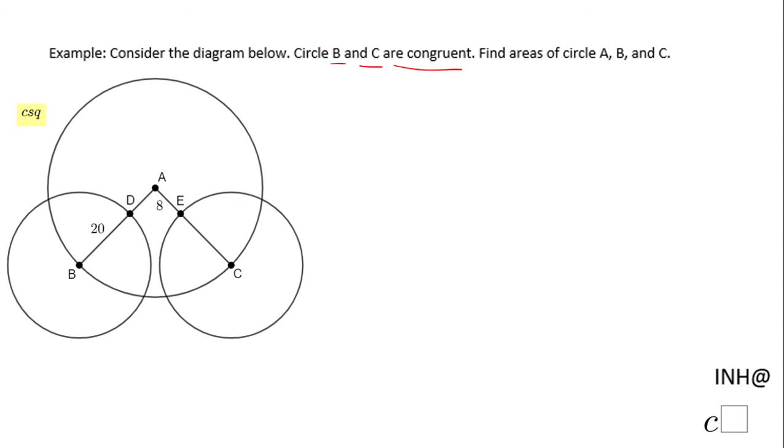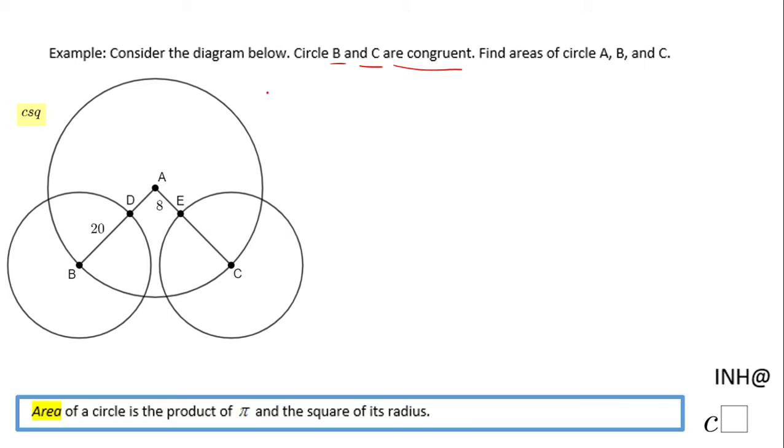We need to find the areas of these three circles. For finding the area, we need the radius because area is nothing else than π r squared.